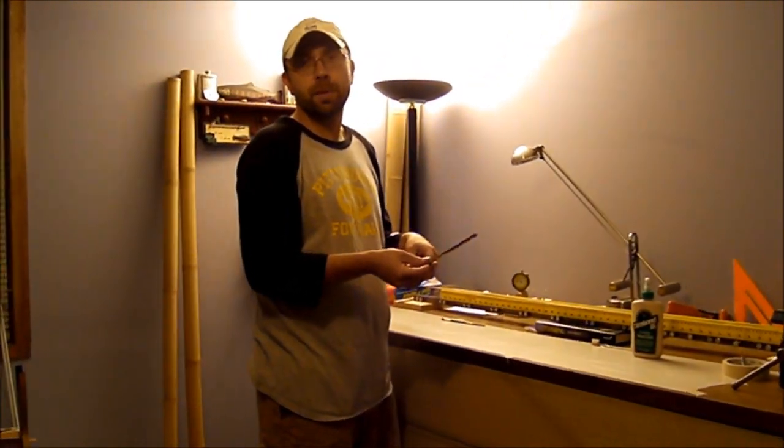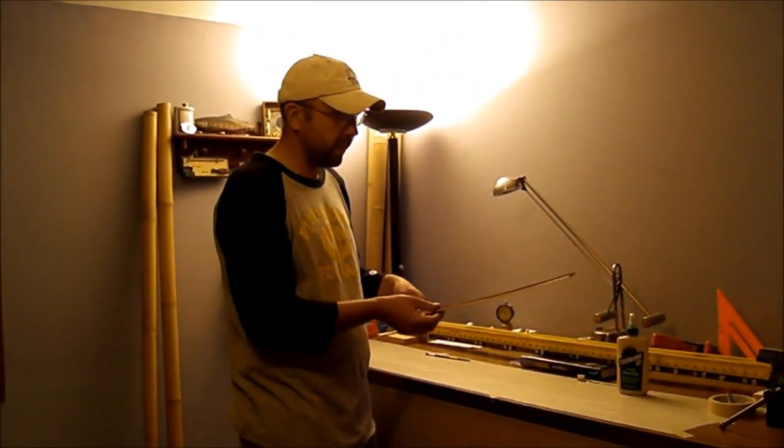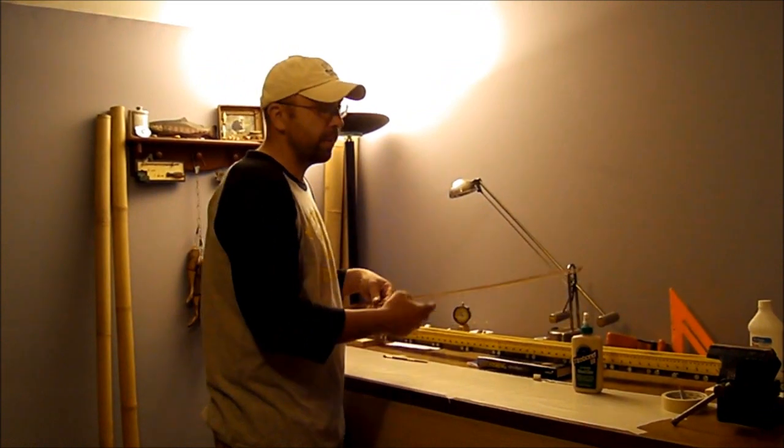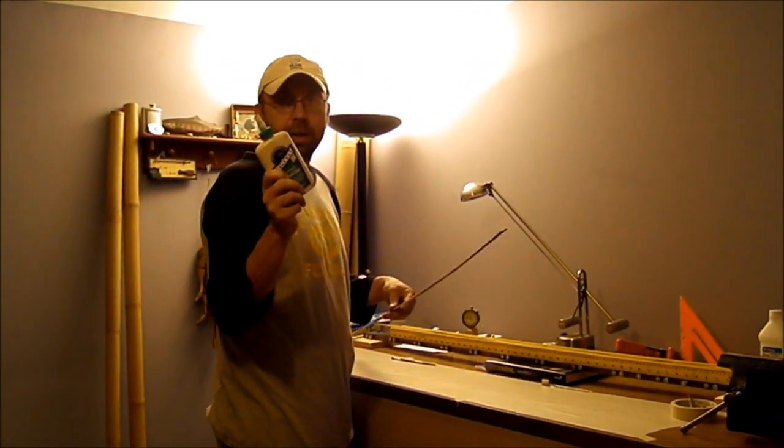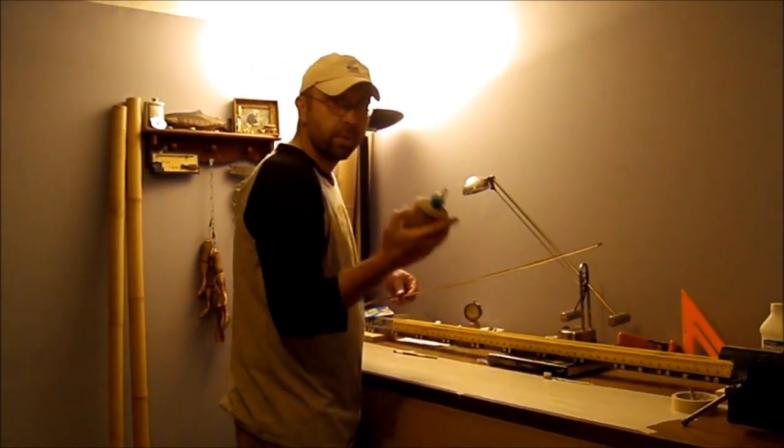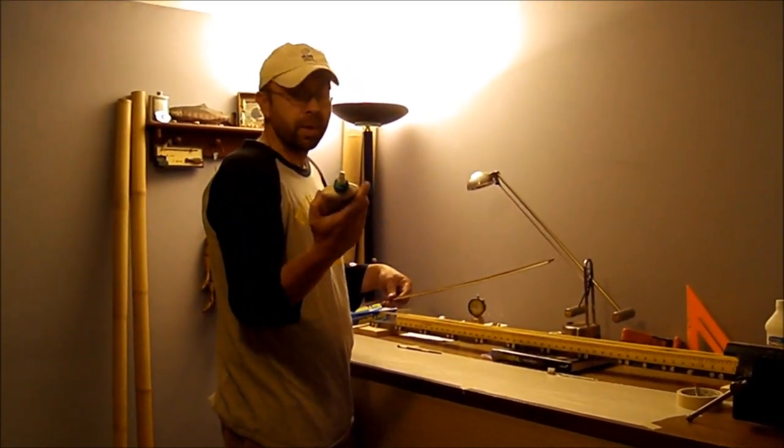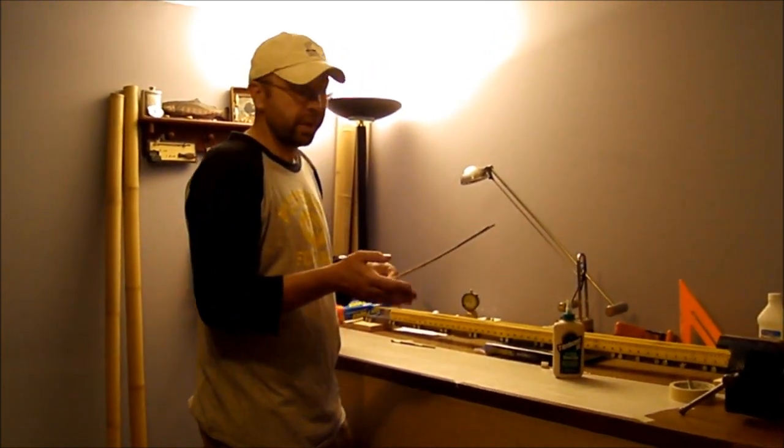I'm going to show you how to glue this up without using any binders, any two ratio glues, any weights. I'm just going to keep it simple. I'm going to hand bind and I'm going to be using just regular old Titebond 3 glue. You can find this at any big box hardware store. It's a really good glue for bamboo fly rods. My opinion, one of the best glues out there, ease of use.